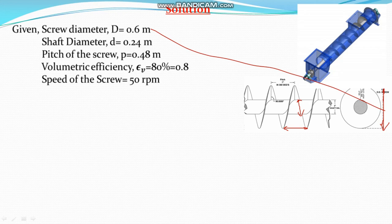The volumetric efficiency depends on the screw itself because the screw has certain volume to be occupied. The volumetric efficiency or epsilon V is 80 percent or in fraction is 0.8.